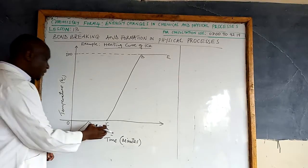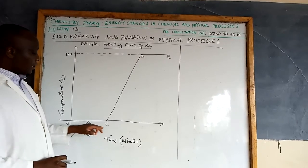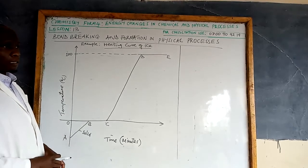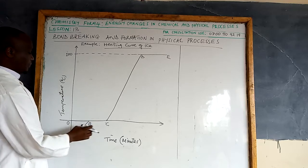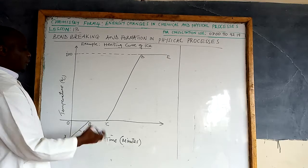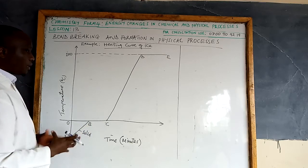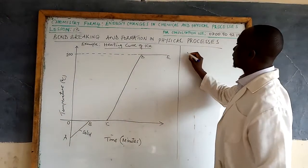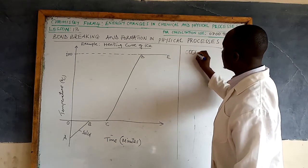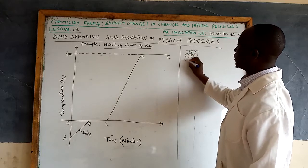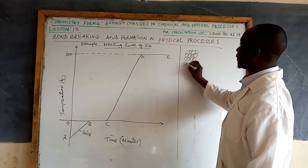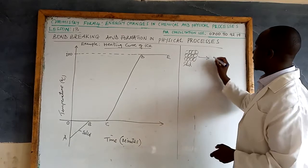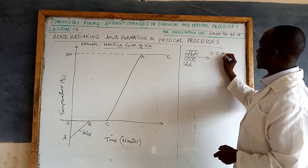At region BC, the temperature remains constant. The reason the temperature remains constant, despite the fact that heating is continuing, is because the heat energy supplied at this point is absorbed to weaken the forces of attraction between the solid particles. When the forces have been weakened enough, the particles shift their position. In solid state, the particles are closely packed together. As you continue to heat, the interparticle distance increases, and that increase in distance is what results in melting.